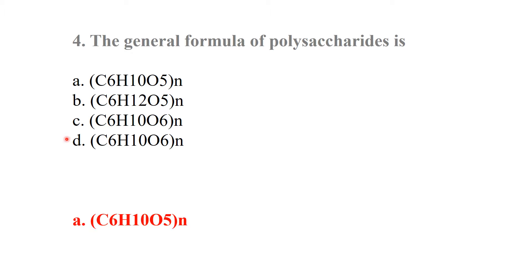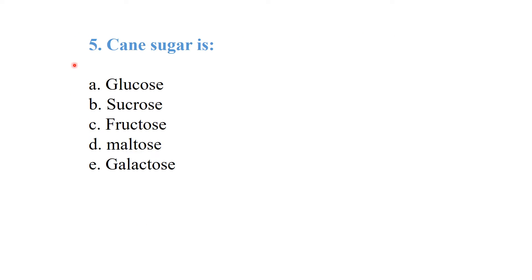The general formula of polysaccharides — the best answer is option A: (C6H10O5)n. Cane sugar — the sugar present in cane is called sucrose. Sucrose is also called table sugar.